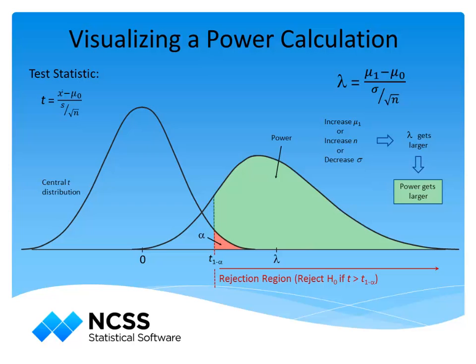Again, the non-centrality parameter gets larger as sample size gets larger, the standard deviation gets smaller, or the difference between the true mean and the null mean gets larger. Since researchers rarely have control over the true mean or the standard deviation, they can only increase or decrease the power by increasing or decreasing the sample size. Using the appropriate formulas, a corresponding sample size can be found for any desired power.